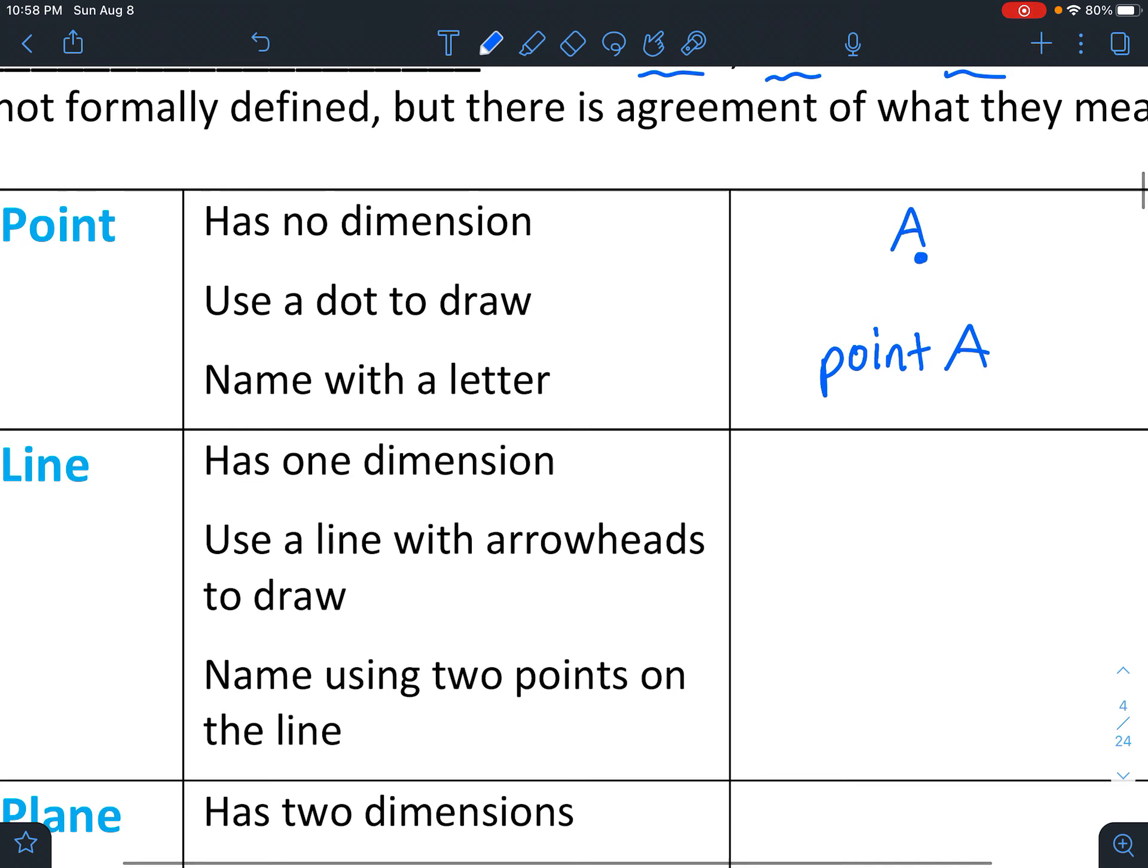And then let's talk about a line. So a line has one dimension. It's going to be flat like it's on a piece of paper. And you want to use a line with arrowheads to draw it. The arrowheads represent that it goes on forever. And a line in geometry is always straight. We don't have a curved line. It's just exactly straight.